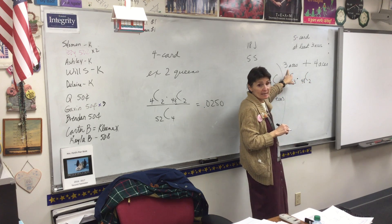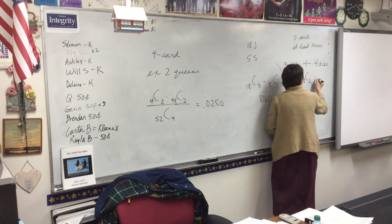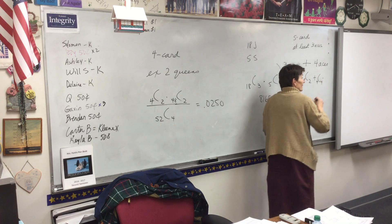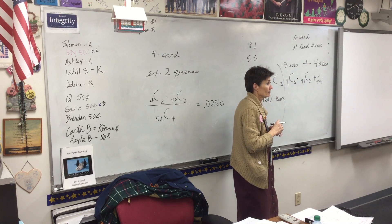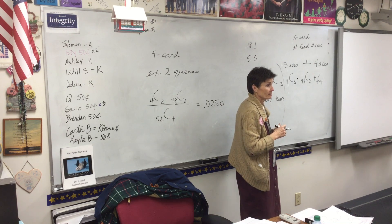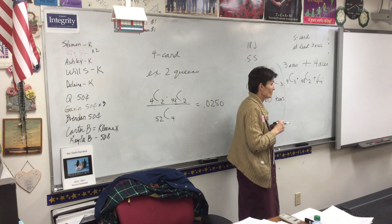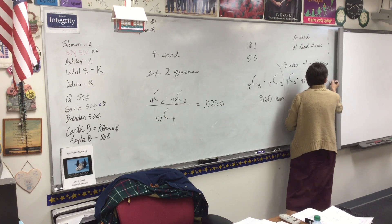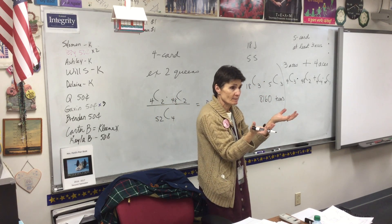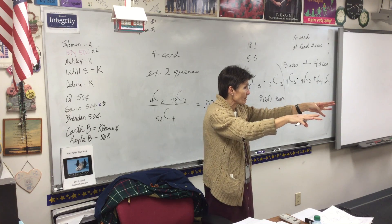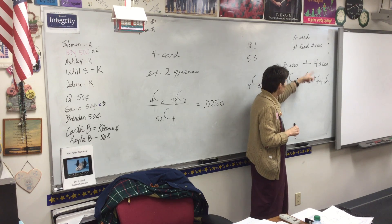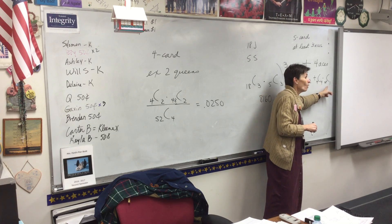That takes care of 3 aces. What does it look like if you're getting 4 aces? 4C4 — because you want 4, there are 4 aces, you want all 4 of them. And for a 5-card hand, what's the other one? Not an ace. How many of those cards are there? 48. And you want one of them — 48C1. So: if you want 3 aces, you take 3 out of the 4 and 2 out of the others. If you want 4 aces, you take 4 out of the 4 and 1 out of the others.